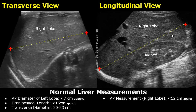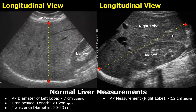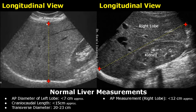This image shows us how to take the AP measurement of the right lobe. The measurement is less than 12 cm approximately. One caliper is placed at the anterior margin of the right lobe and the other caliper is placed at the posterior margin.